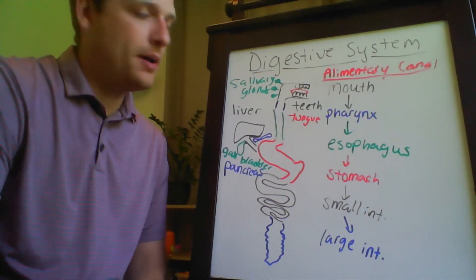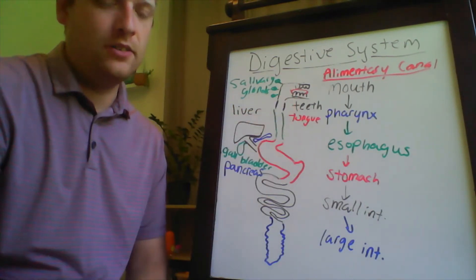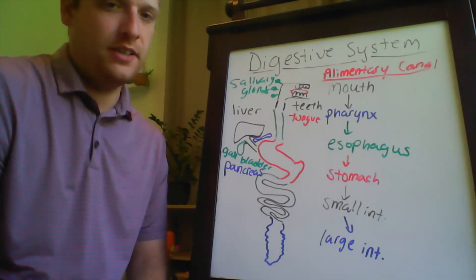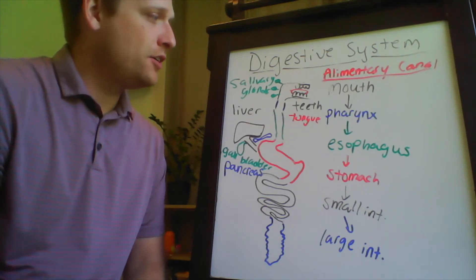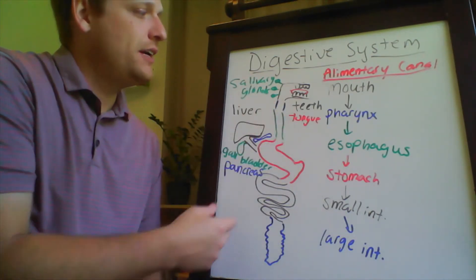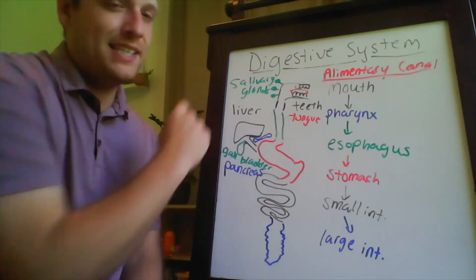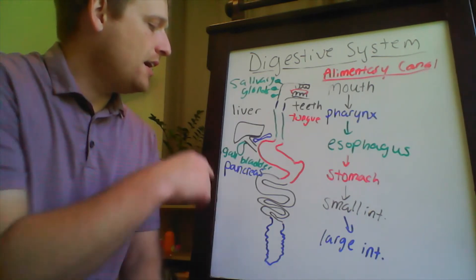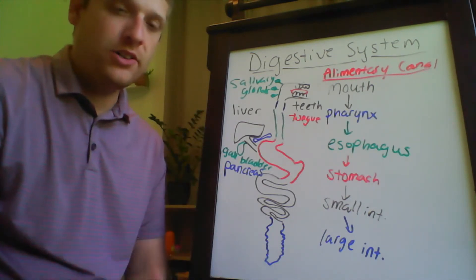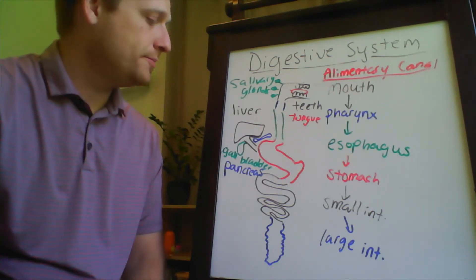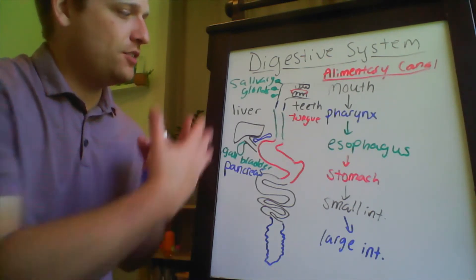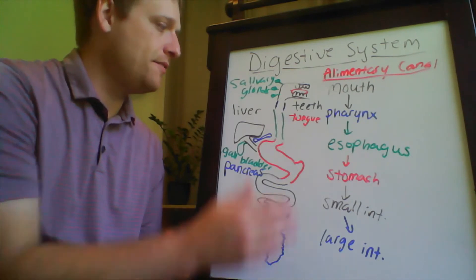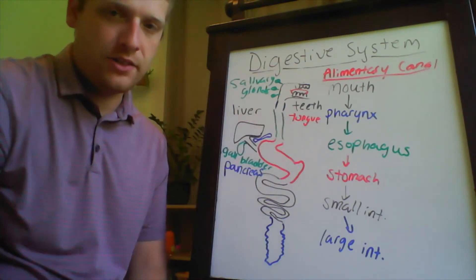In addition to the primary tube of the alimentary canal, you also have accessory organs that assist in the functions of digestion. In the area of the mouth, you have the teeth and the tongue. You also have the salivary glands, which assist in chemical digestion, as well as the liver, gallbladder, and pancreas, which also assist in chemical digestion. So that is the total big picture of the digestive system: organs of the alimentary canal and the accessory organs.